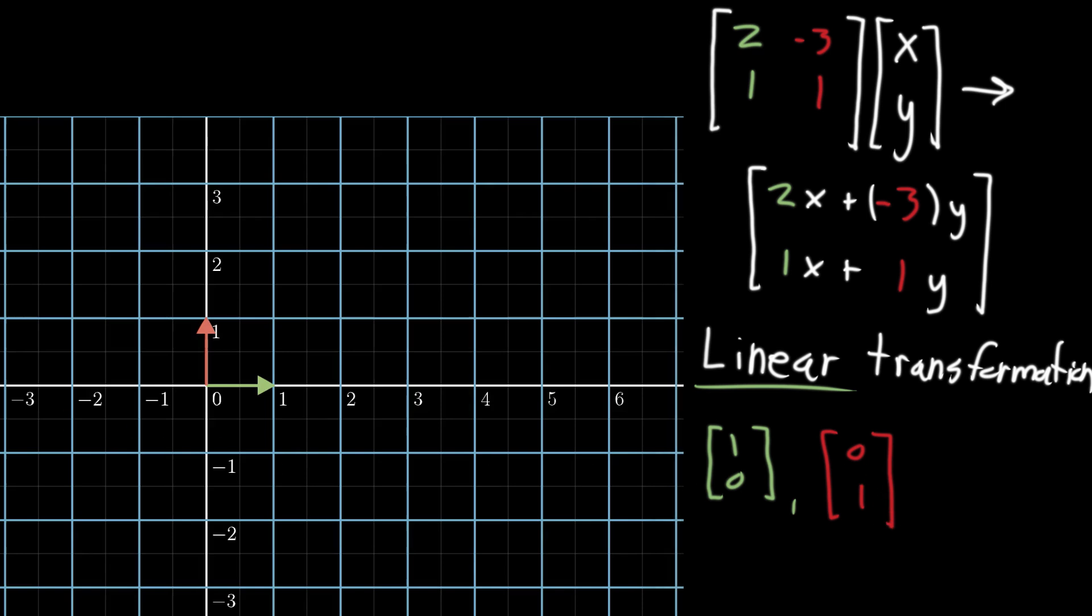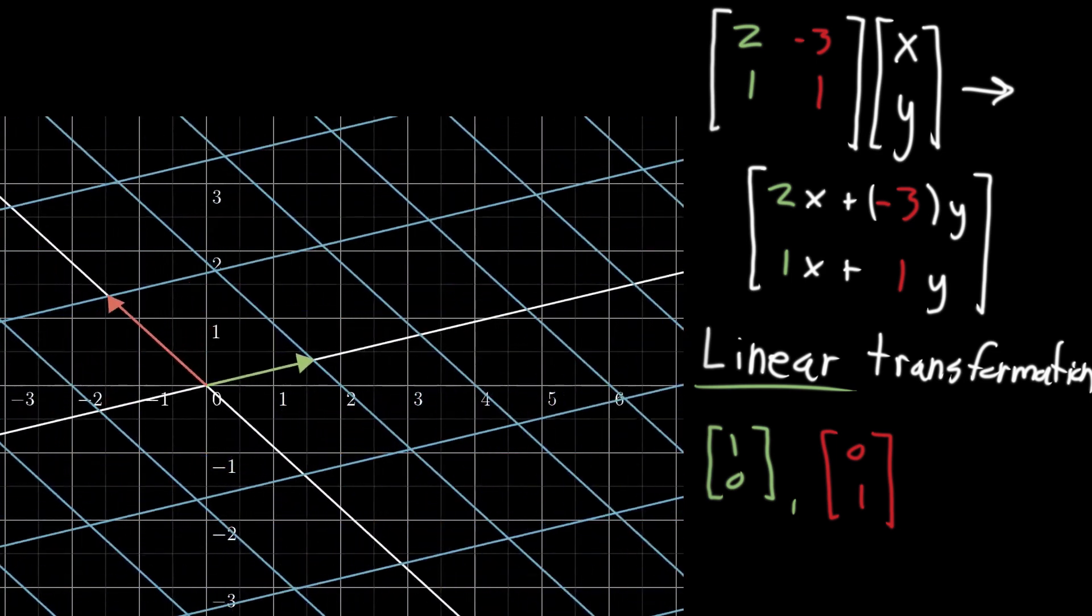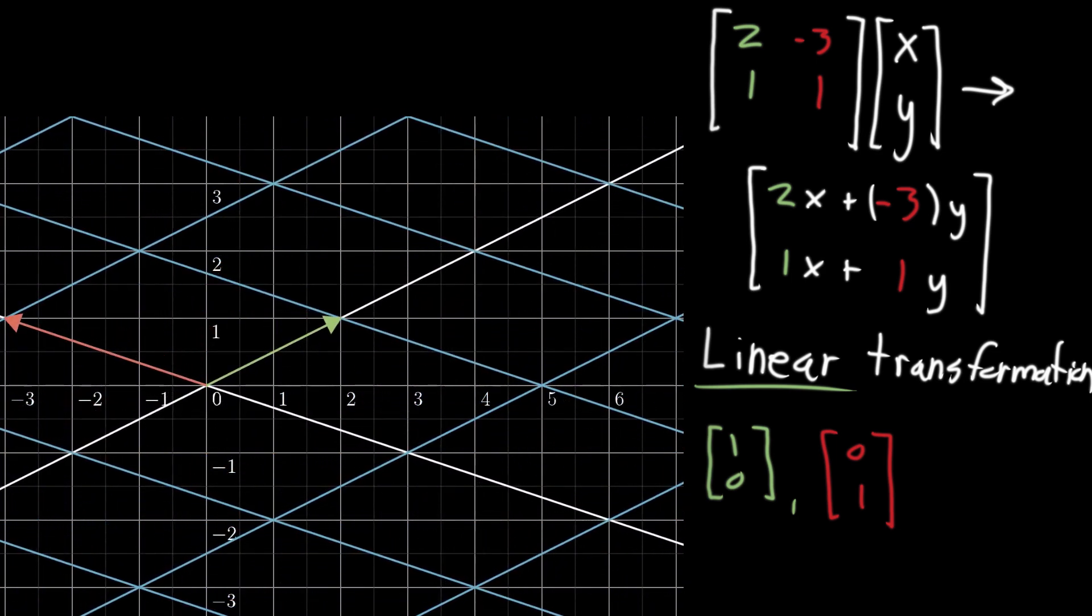If we notice where they land under this transformation, when the matrix is multiplied by every single vector in space, the place where the green vector lands—the one that started off as (1, 0)—has coordinates (2, 1).